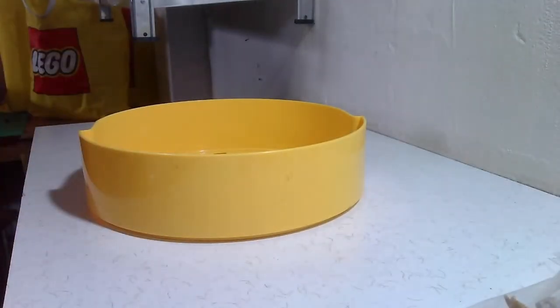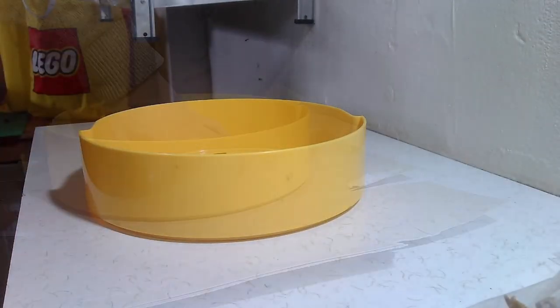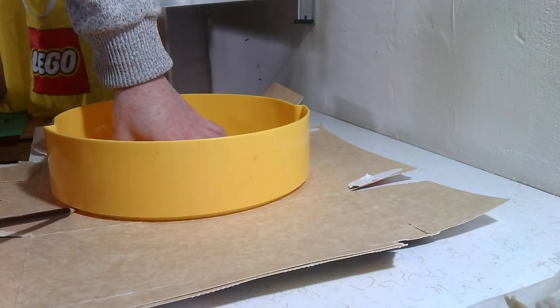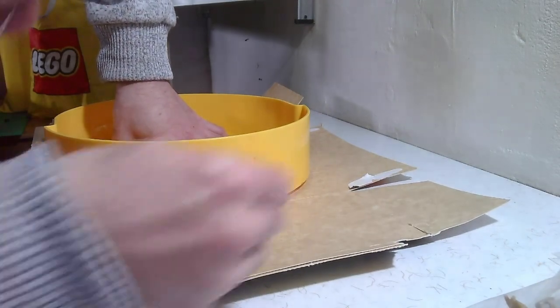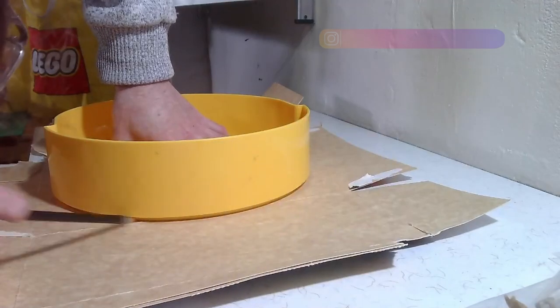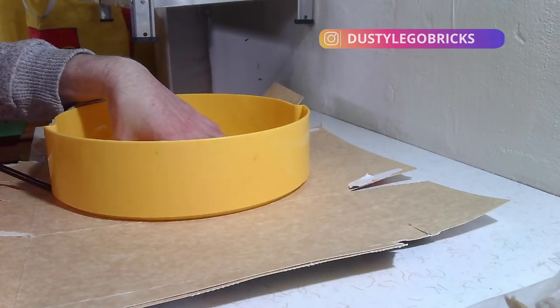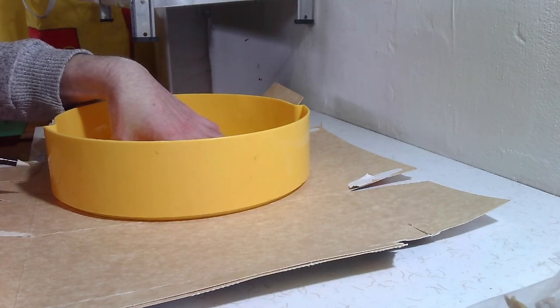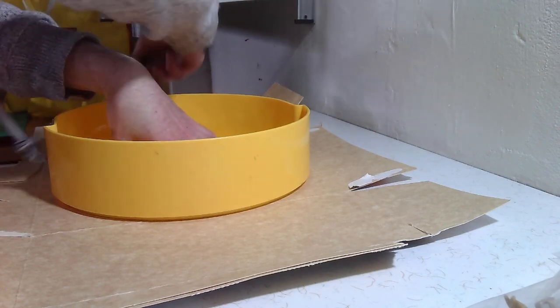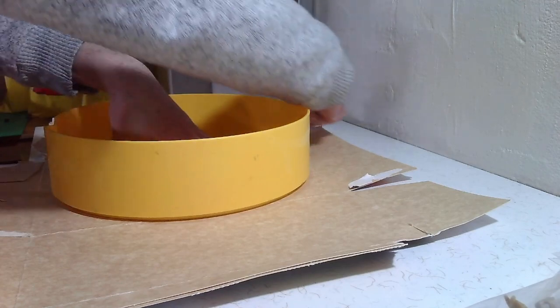Alright, so we take that one, chuck it onto a bit of cardboard and trace around it to make a filter template. That's what we call it, a plate filter. Doing it on cardboard to make sure it's right before cutting out the proper plate filter.